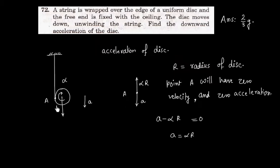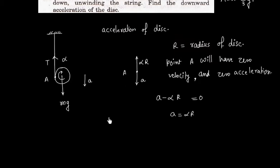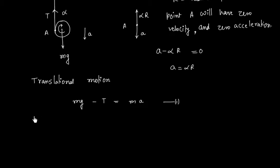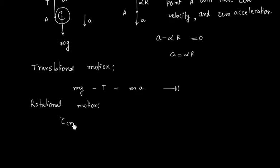Now let us find what forces are acting on this disk. One force is Mg, another force is tension T. We can write two equations, one for translational motion: the force in the downward direction Mg minus T equals mass times acceleration. We can also write one equation for rotational motion, taking torque about the center of mass equals I about center of mass times angular acceleration.